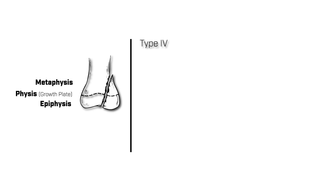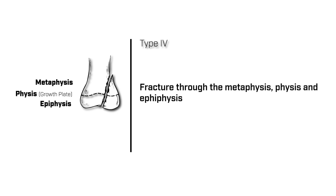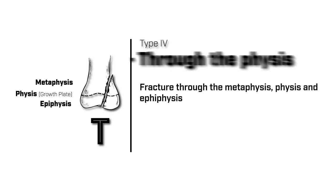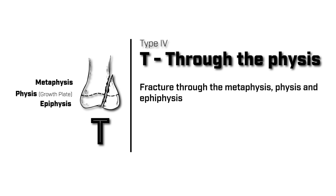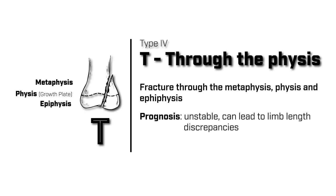Type 4 Salter-Harris fractures are those that go through the growth plate, and through the metaphysis and epiphysis. In our mnemonic, we are now at the letter T, which stands for a fracture that goes all the way through the metaphysis, the growth plate, and epiphysis. Prognosis is variable because this is mostly an unstable fracture, and operative management should be considered.